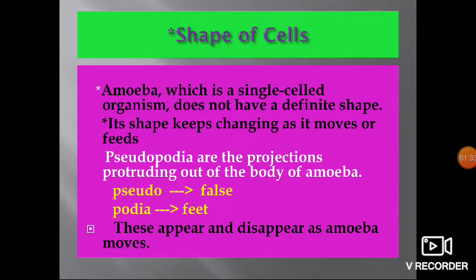The next topic is the shape of cells. Amoeba, which is a single-celled organism, does not have a definite shape. Its shape keeps changing as it moves or feeds. Pseudopodia are the projections protruding out of the body of amoeba. 'Pseudo' means false and 'podia' means feet, so pseudopodia means false feet. The pseudopodia appear and disappear as amoeba moves.